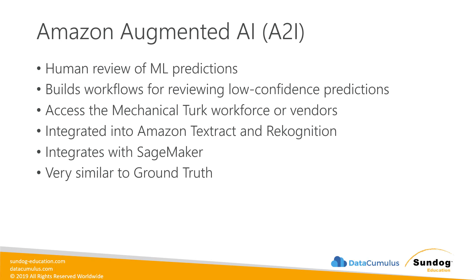They also introduced Amazon Augmented AI, or A2I. It's a system for doing human review of ML predictions, similar to SageMaker Ground Truth but a little more general in nature. It allows you to build workflows for reviewing low-confidence predictions — rerouting those to actual human beings for further review automatically. Like Ground Truth, you can access Amazon's Mechanical Turk workforce, vendors that specialize in this, or even your own internal staff. It integrates with Amazon Textract and Amazon Rekognition, so you can push a button and have humans review low-confidence classifications from text or images. It integrates with SageMaker as well.